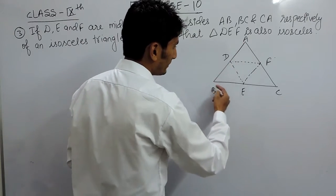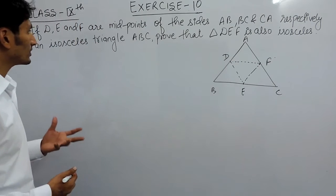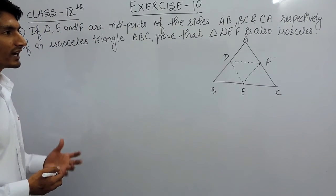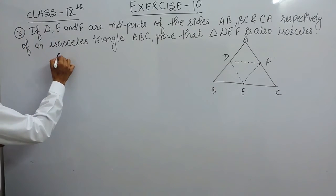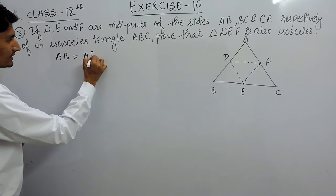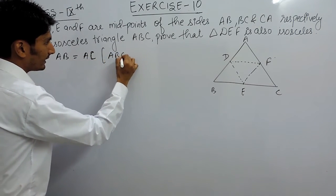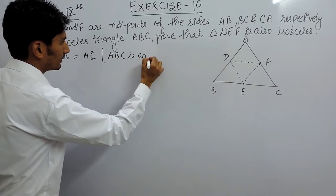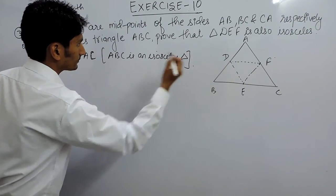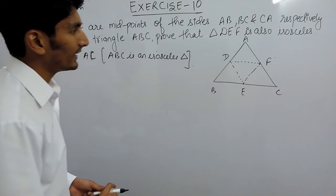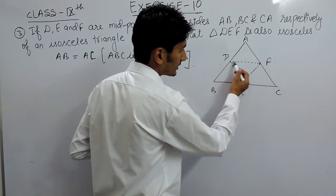It is given that ABC is an isosceles triangle, and we know that an isosceles triangle is a triangle whose two sides are equal. So AB is equal to AC. This is because ABC is an isosceles triangle. And you have to prove that triangle DEF is also an isosceles triangle.